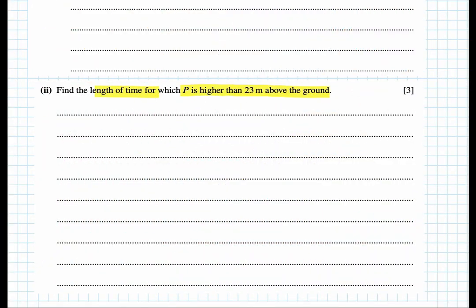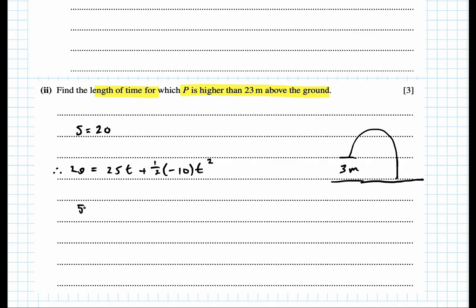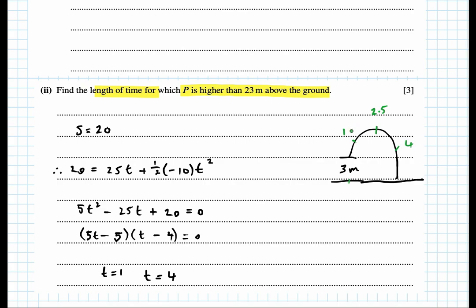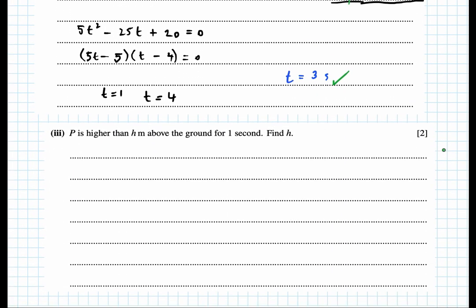The second part requires the length of time for which P is higher than 23 meters — that's 20 meters above the 3 meters we started on. Setting s = 20 in the suvat equation gives a quadratic. Solving gives t = 1 and t = 4. With the greatest height at 2.5 seconds, there's a time phase of 3 seconds, from t = 1 to t = 4, where P is above 23 meters.